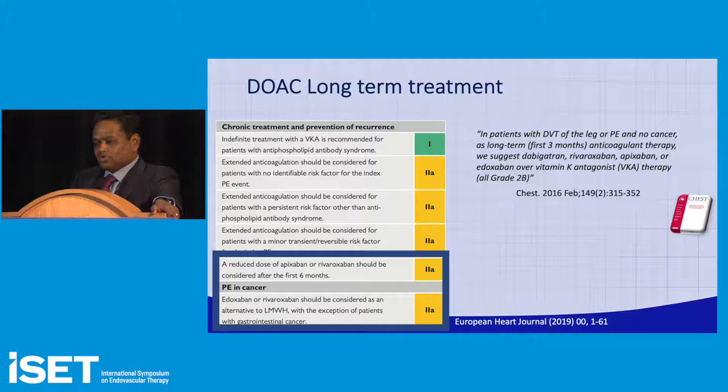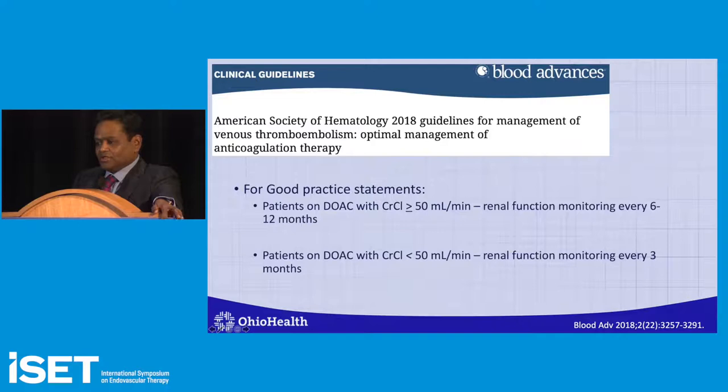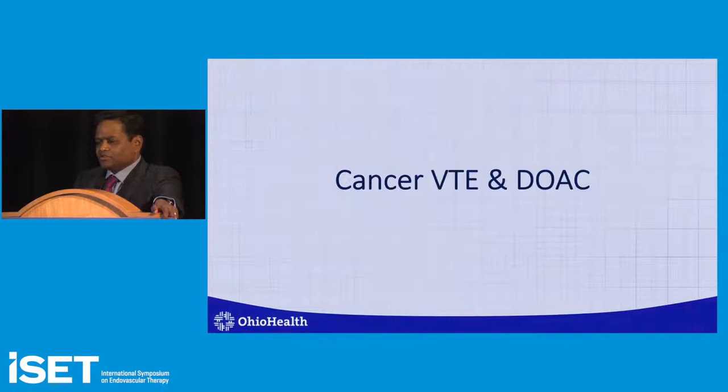It is also good practice to see these patients — or at least your physician extender — at six to twelve months, and if they have renal insufficiency with creatinine clearance less than 50 mL, every three months. I generally don't use DOACs in this population at all.